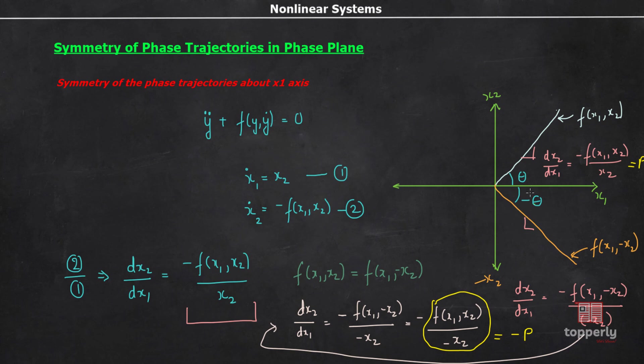Therefore, the condition that the slopes must be equal in magnitude but opposite in sign for x2 greater than 0 and x2 less than 0 is satisfied. Thus, we can conclude that, for the phase trajectories to be symmetrical about the x1 axis, the condition is, the function f of x1 comma x2 must be an even function of x2. So, just keep this in mind.